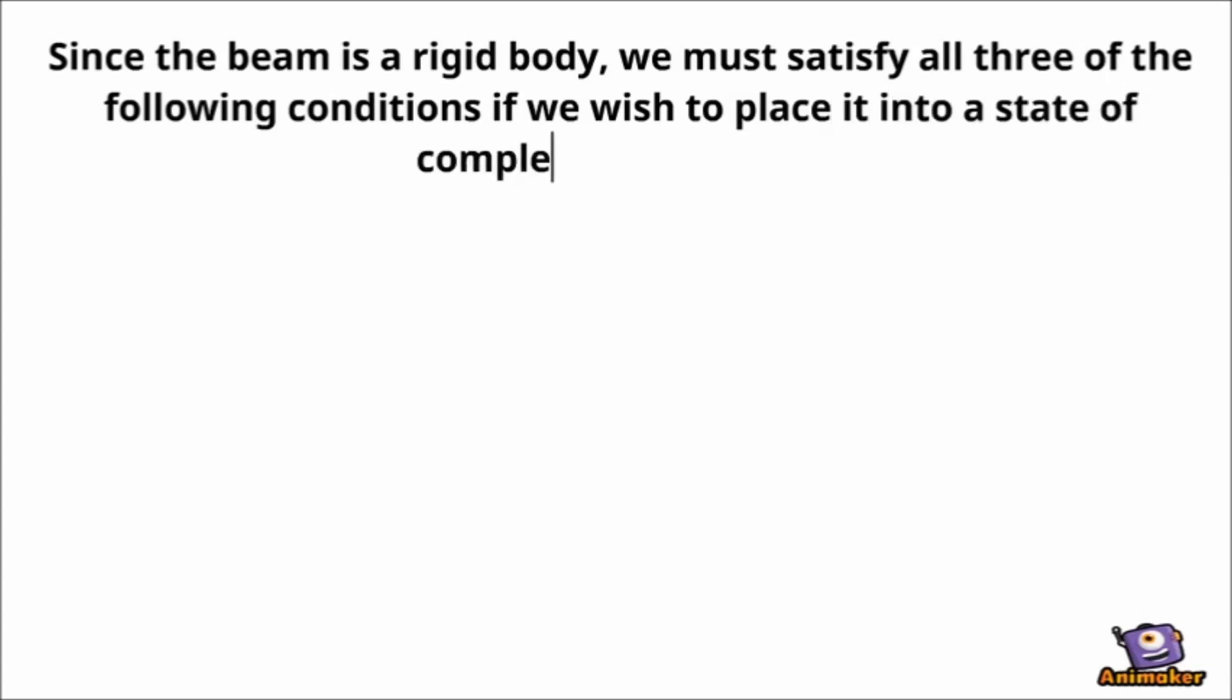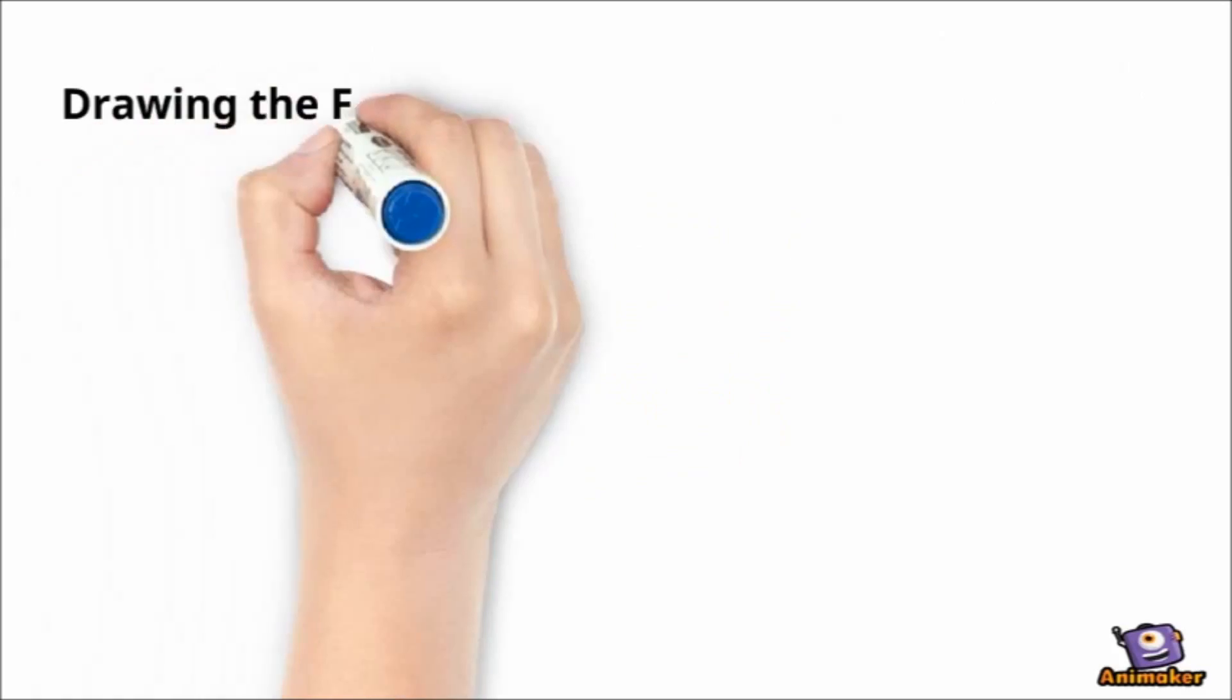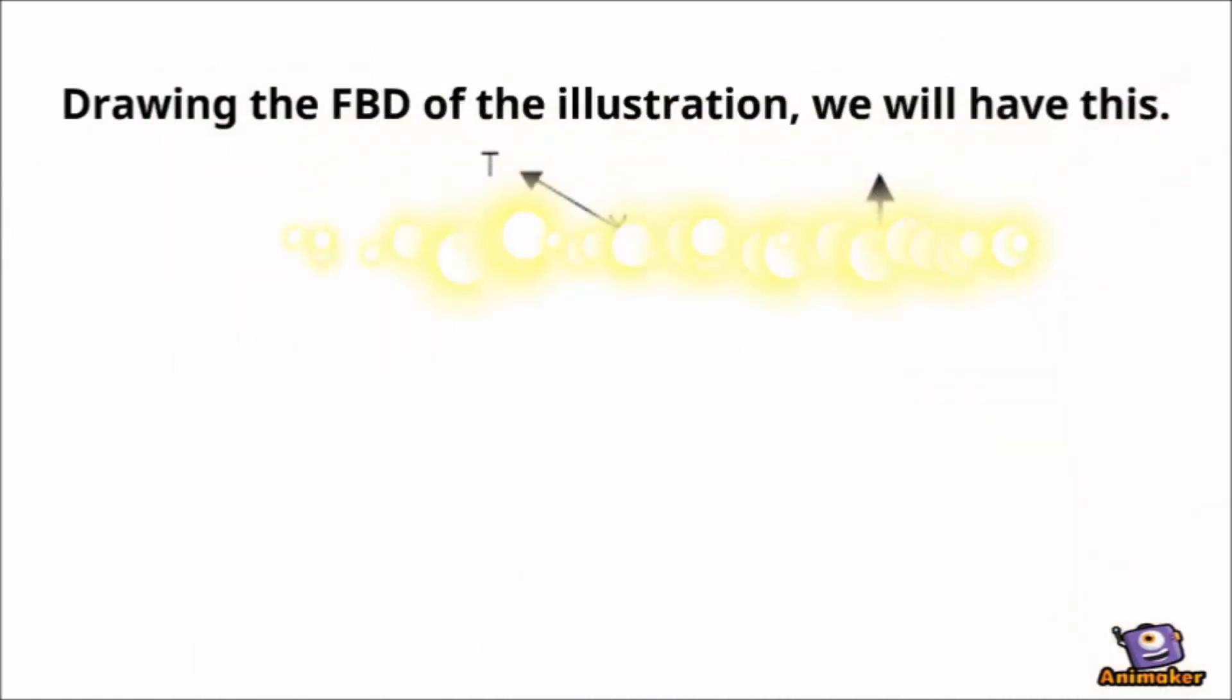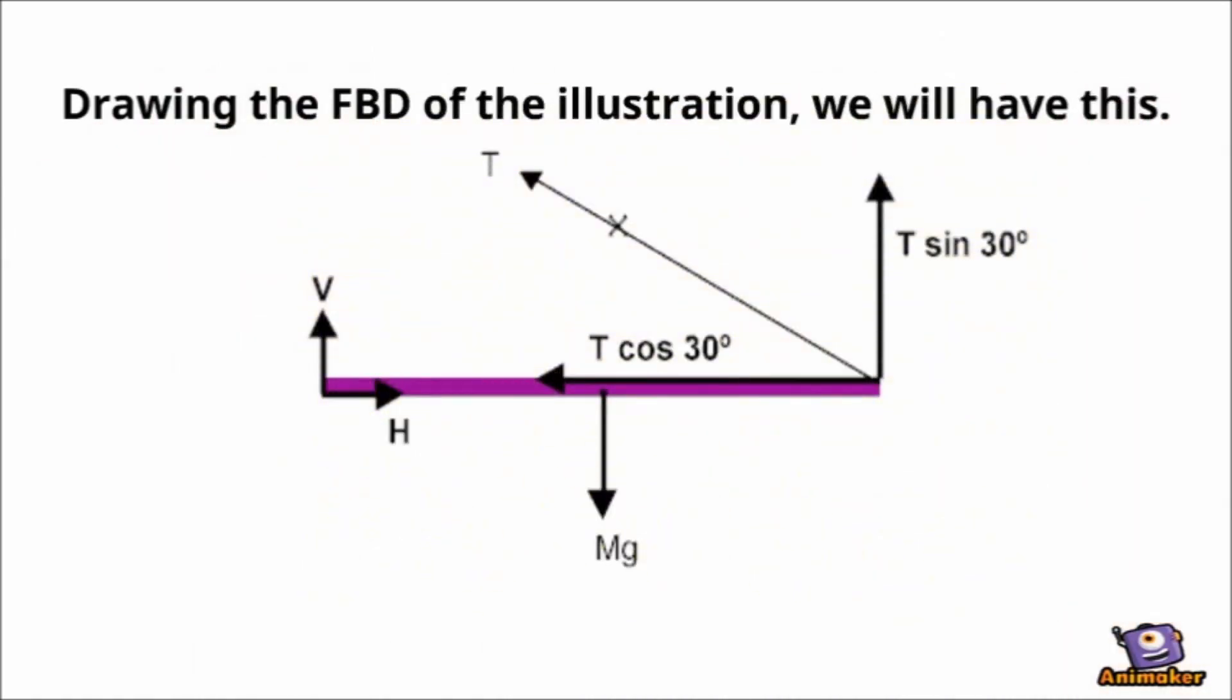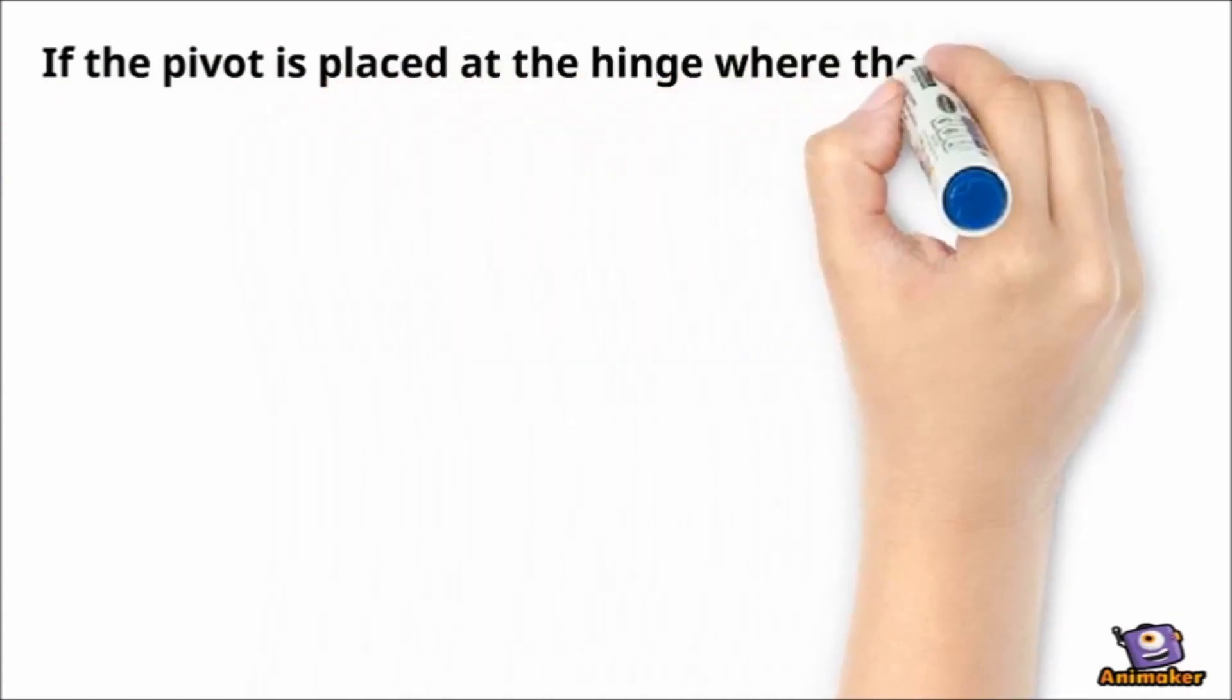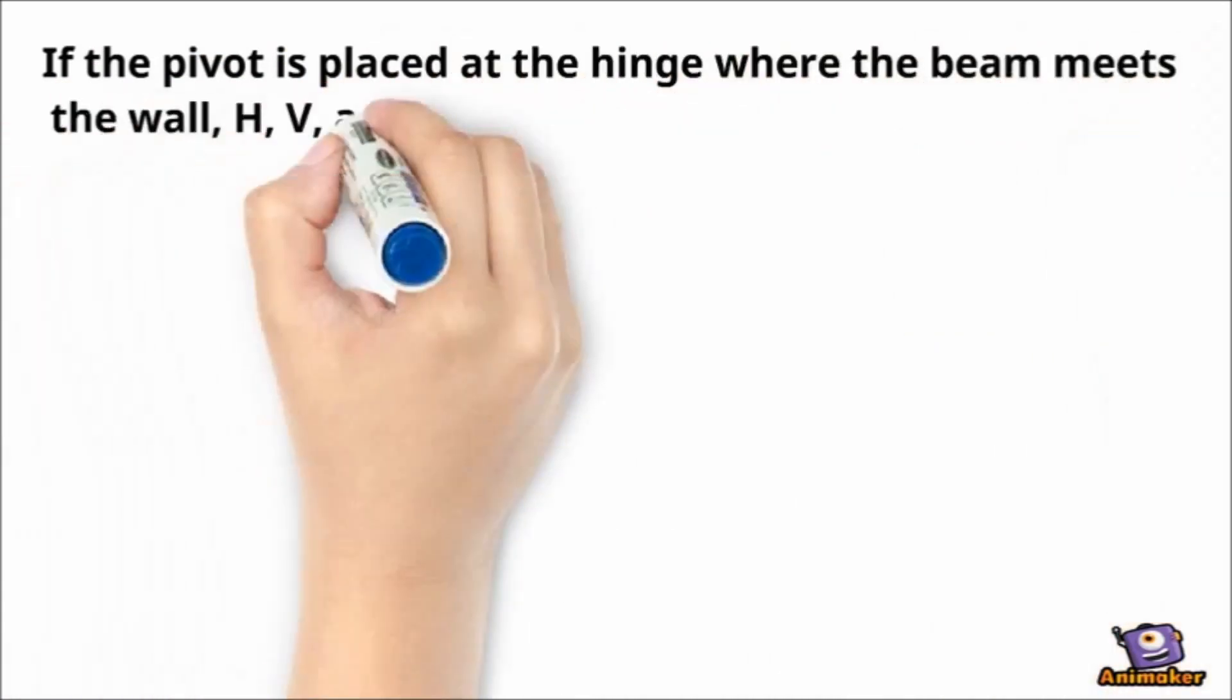Since the beam is a rigid body, we must satisfy all three of the following conditions if we wish. Drawing the FBD of the illustration, we will have this. If the pivot is placed at the hinge where the beam meets the wall.